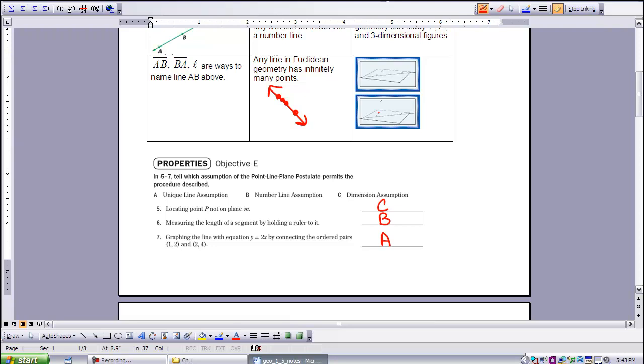Number five, locating point P not on plane M. So basically, that's saying we have a point out in space, giving us permission to say we have dimension, so that's C.